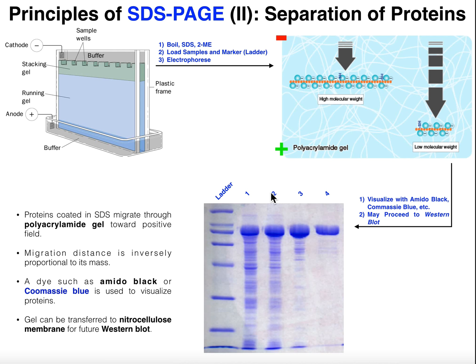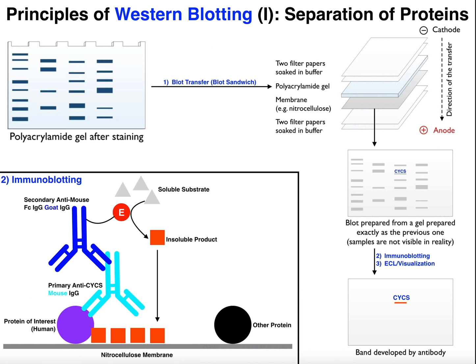From here, you can proceed to a second part of the experiment called a western blot, which we'll discuss in a separate video. Western blotting allows you to see just one specific protein rather than all of them — there may be hundreds of proteins visible in the stained gel. For example, if this one bold band near the top is the only protein I care about, I don't need all the others. A western blot would allow me to isolate just that one protein of interest.